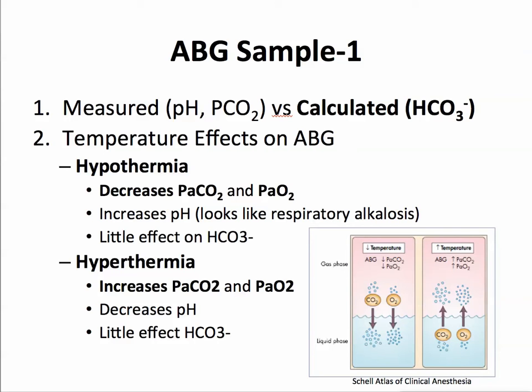With hyperthermia, conversely, the molecules have more kinetic energy, so PaCO2 goes up and the partial pressure of oxygen goes up as well. And because the CO2 is going up, you get a decrease in pH, or acidosis. This is shown in pictorial form — a decrease in temperature causes a decrease in PaCO2 and PaO2 partial pressures.